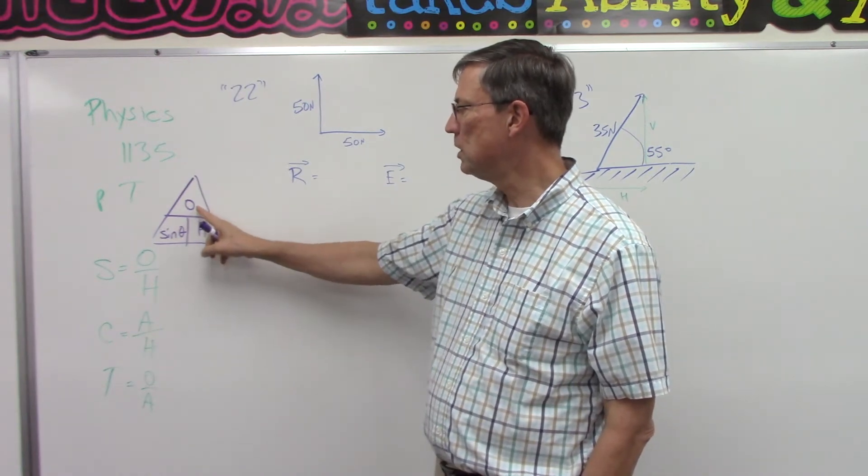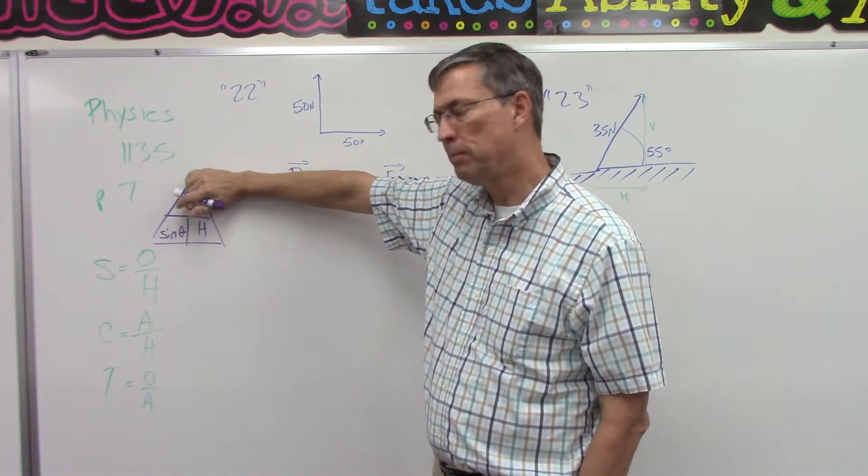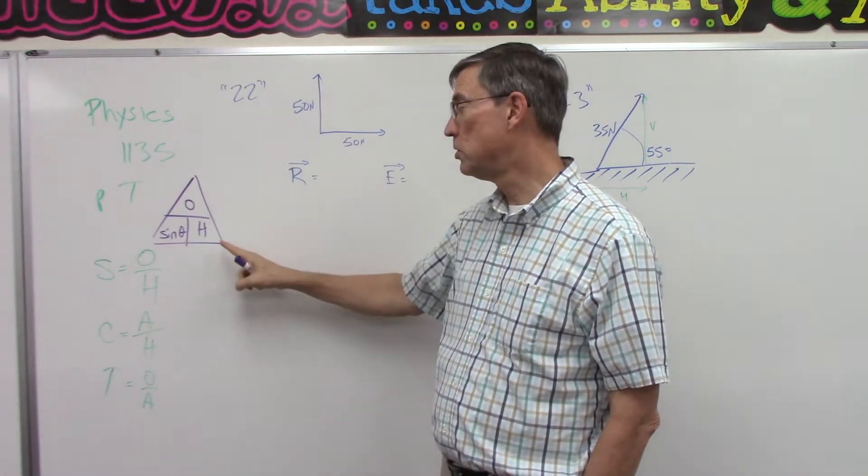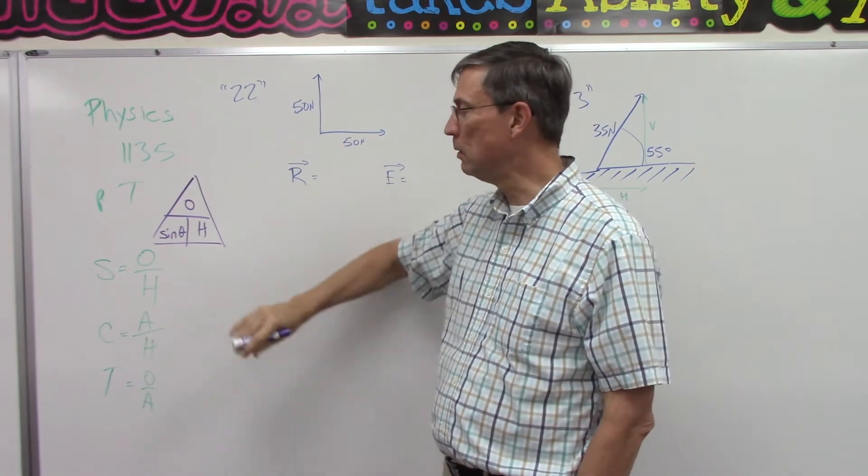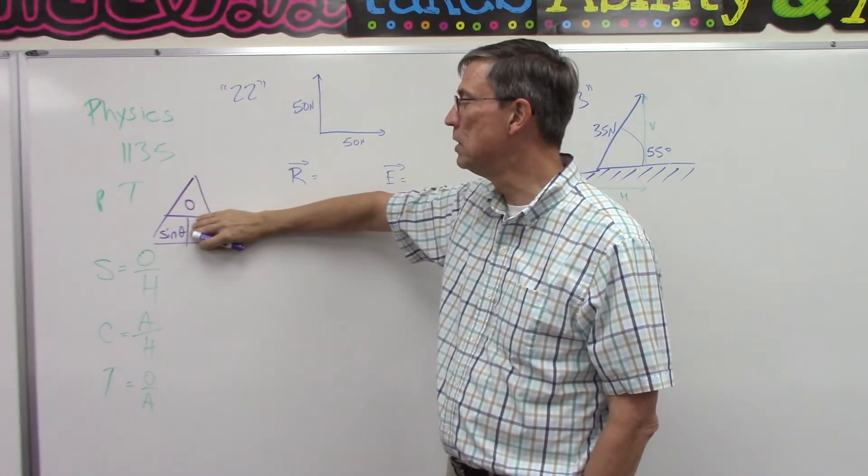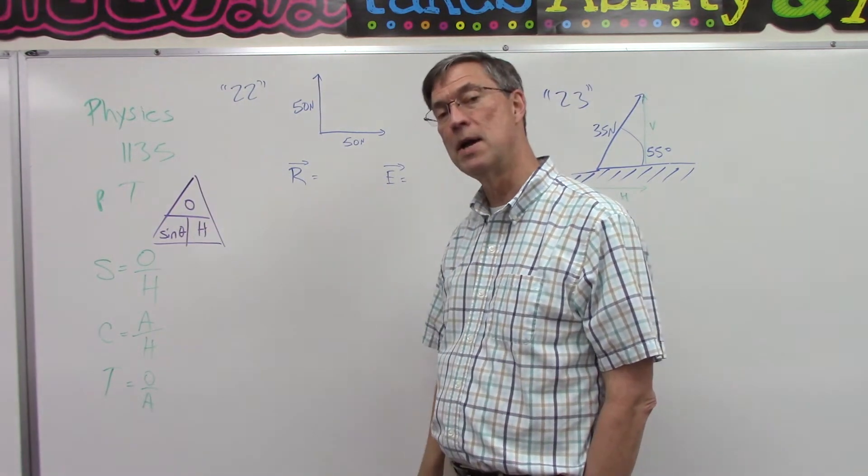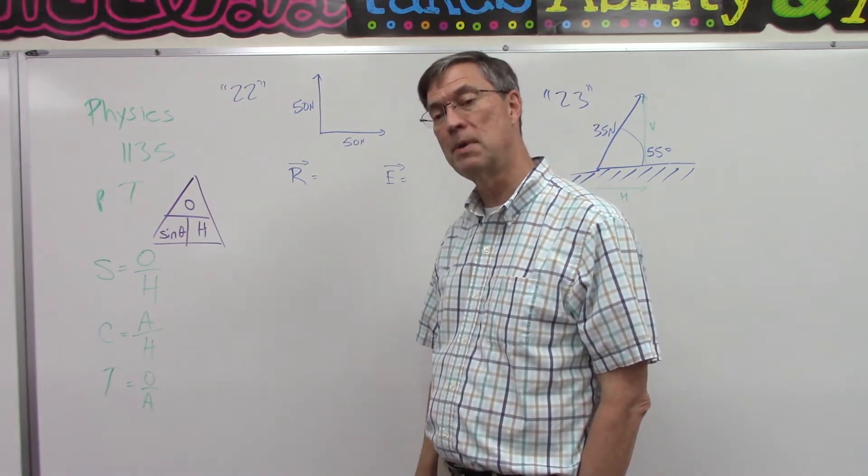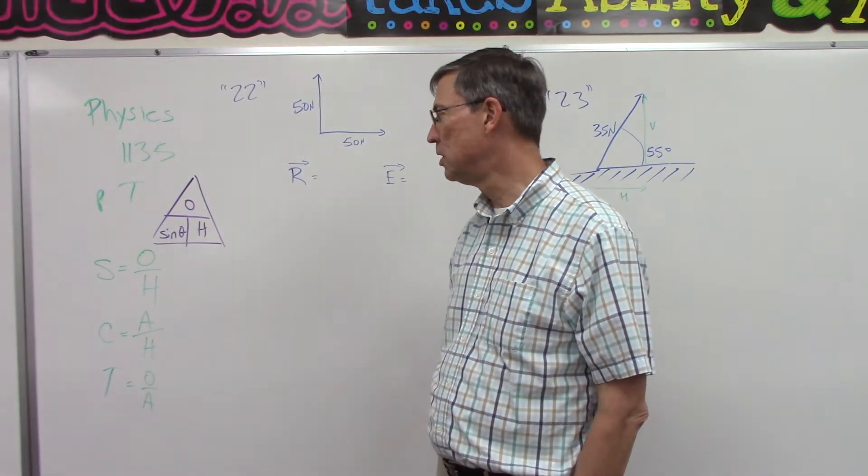Here's the hypotenuse, the opposite. And if I wanted to solve for the opposite, I would multiply these two together. If I wanted to solve for the hypotenuse, which we are in some of these problems, we would cover up hypotenuse and take the opposite side and divide by the sine of theta. So that's a little shortcut that maybe you remember, and that will come in very helpful as we do some of these problems.